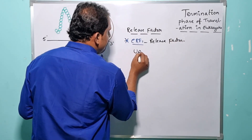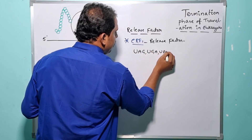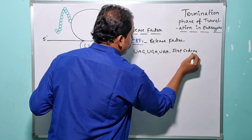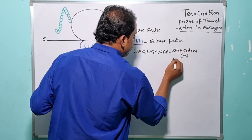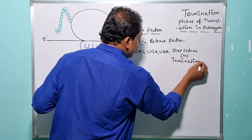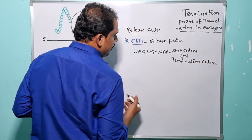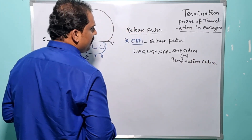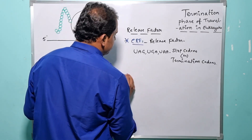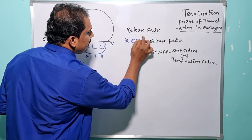The eRF1 is the specialized release factor capable of recognizing all three stop codons or termination codons: UAG, UGA, and UAA. These are otherwise known as amber, opal, and ochre, respectively.